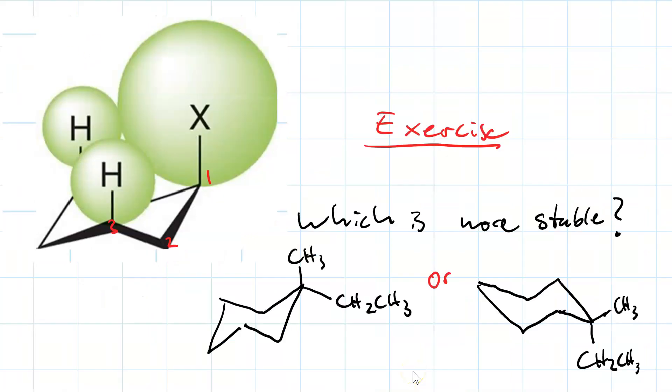Here's an exercise for you to try real quick. I've got a methyl ethyl cyclohexane, where the ethyl group and the methyl group are bonded to the same carbon. In one of the chairs, the methyl group is axial, and the ethyl is equatorial. In the other, the ethyl is axial, and the methyl is equatorial. Which one is more stable? Pause and think about it. When you have your answer, resume.